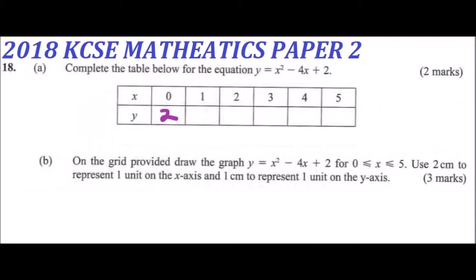When x is 1, y is equal to 1 minus 4, that will be minus 3, minus 3 plus 2, you get minus 1. When x is 2, this will be 4 minus 8, that is minus 4 plus 2, that should give you minus 2.